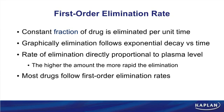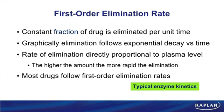With first-order elimination, it's not a constant amount of drug but a constant fraction of drug that's eliminated per unit time. This is what most drugs follow. We can go with the rule that if it's not phenytoin, ethanol, or aspirin, it's going to be eliminated by first-order kinetics. In this case, we follow typical enzyme kinetics — the enzymes are not saturated and are working at less than Vmax. Only in first order can we use the term half-life, because half-life is a constant in first-order elimination.